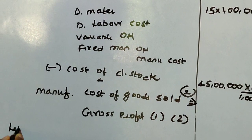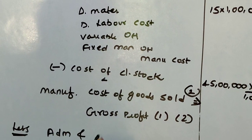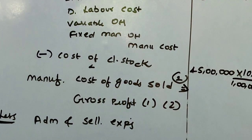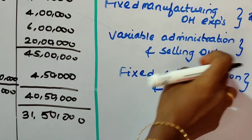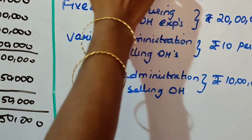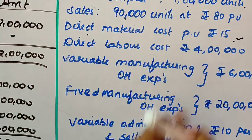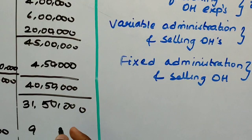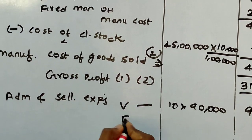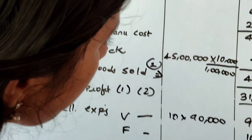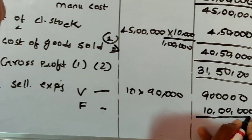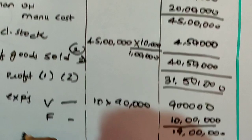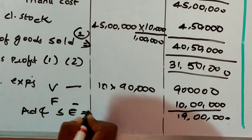From the gross profit, you have to deduct administration and selling expenses. Variable administration and selling overheads are 10 per unit. Sales is 90,000, so 10 into 90,000 gives 9 lakhs. Fixed administration and selling expenses is 10 lakhs directly given. Total administration and selling expenses is 19 lakhs.